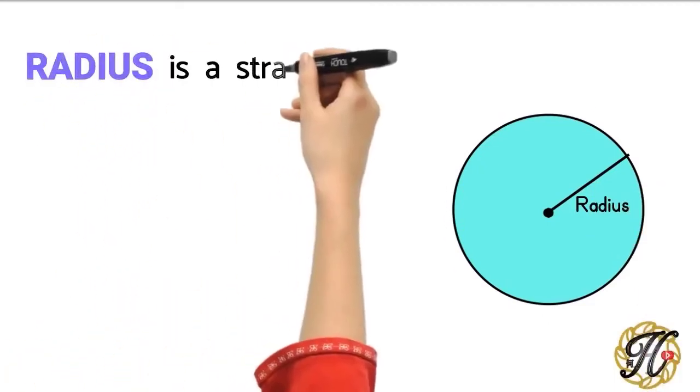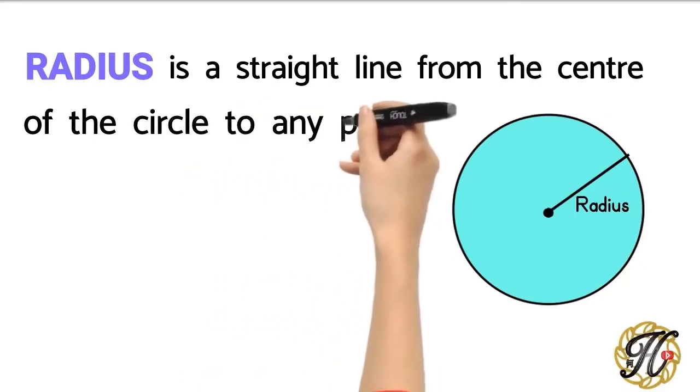Radius is a straight line from the center of the circle to any point on the circumference.